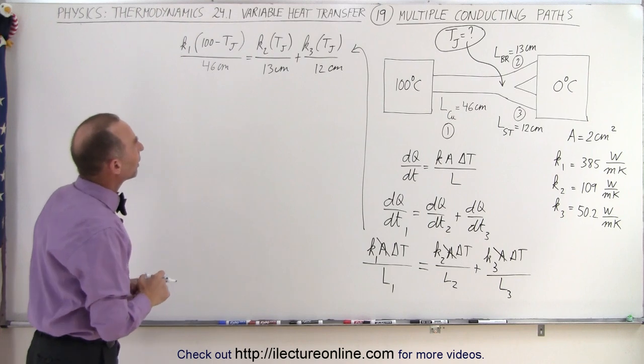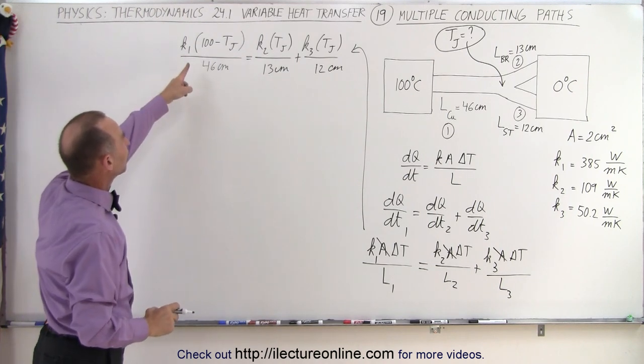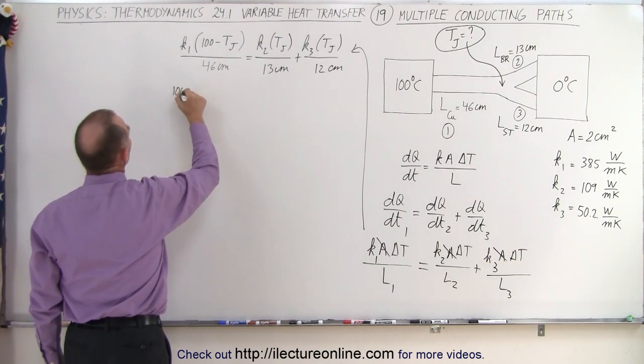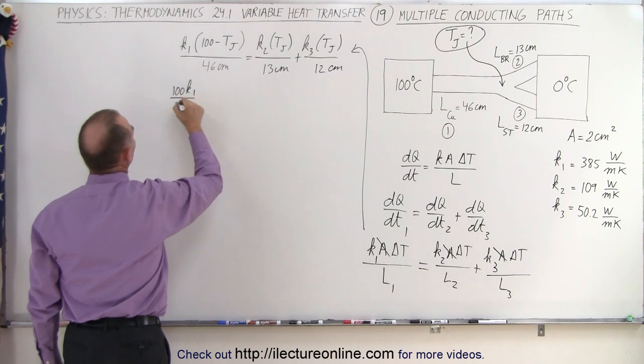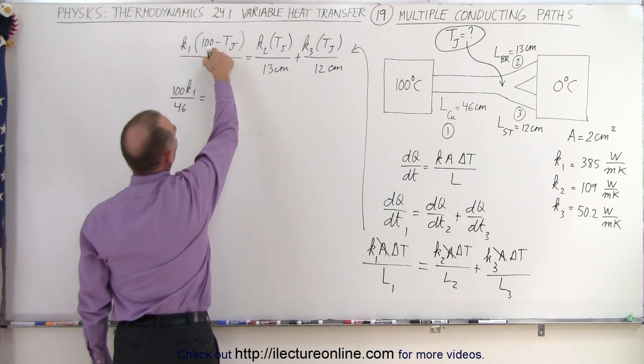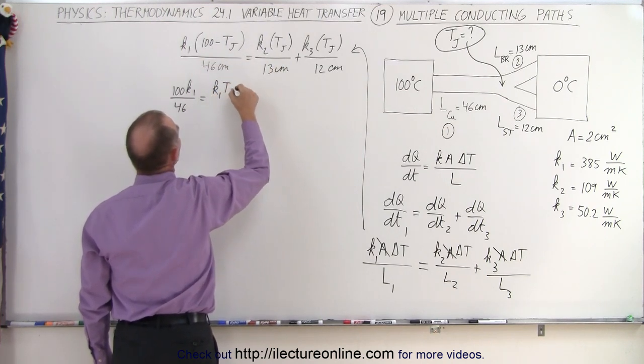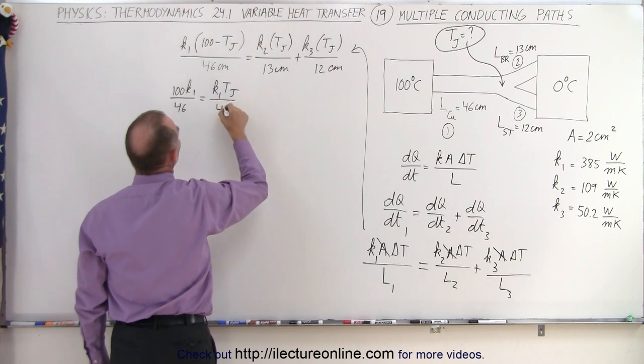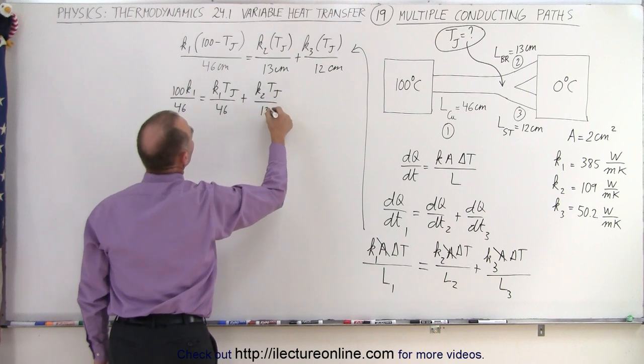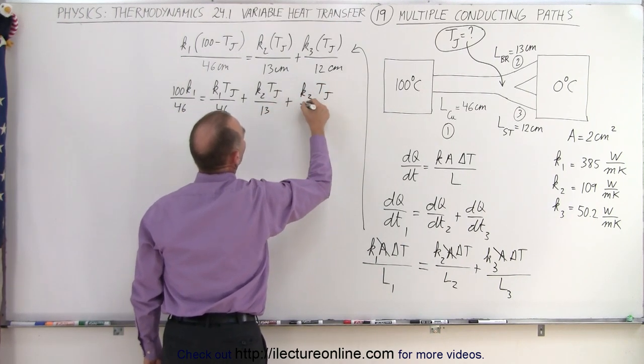Next, we isolate the junction temperature by multiplying through and moving it to the other side. We have 100 K1 over 46 equals K1 T_J divided by 46 plus K2 T_J divided by 13 plus K3 T_J divided by 12.